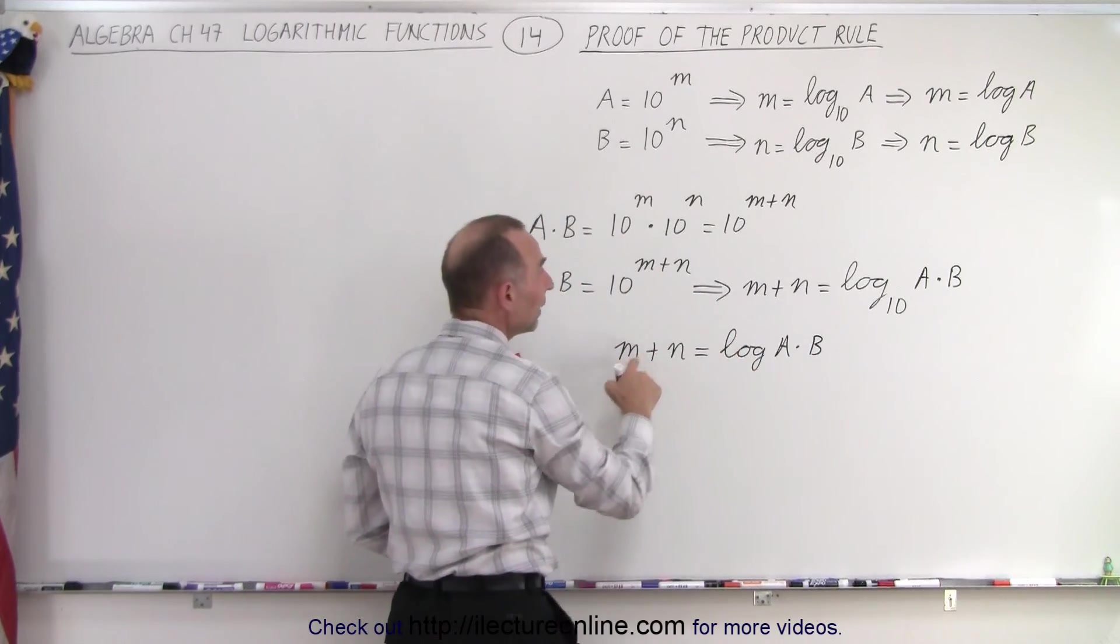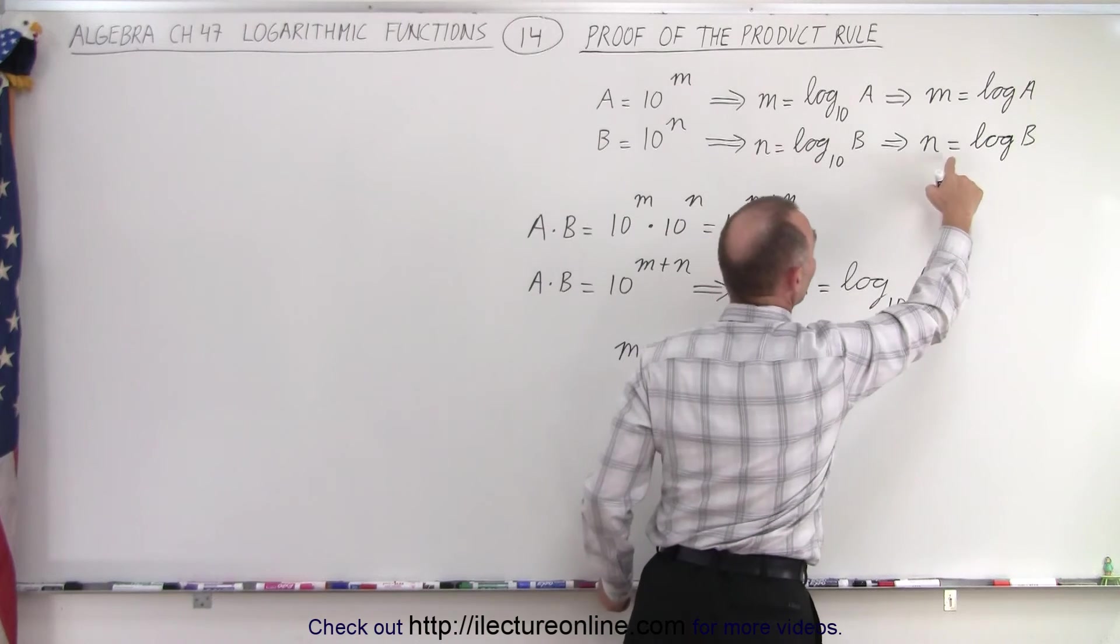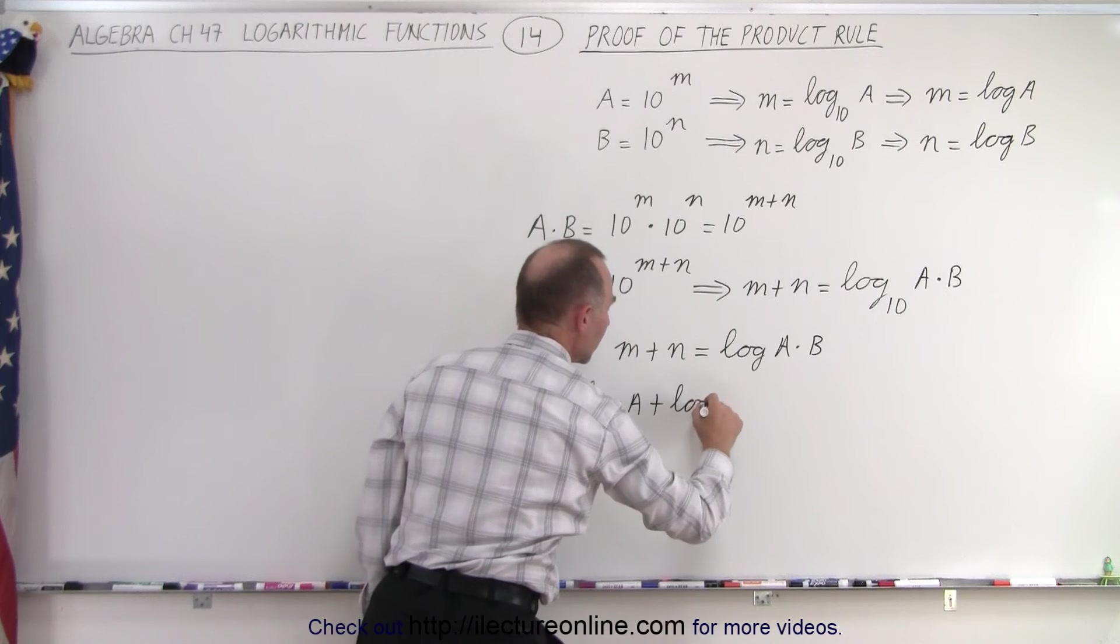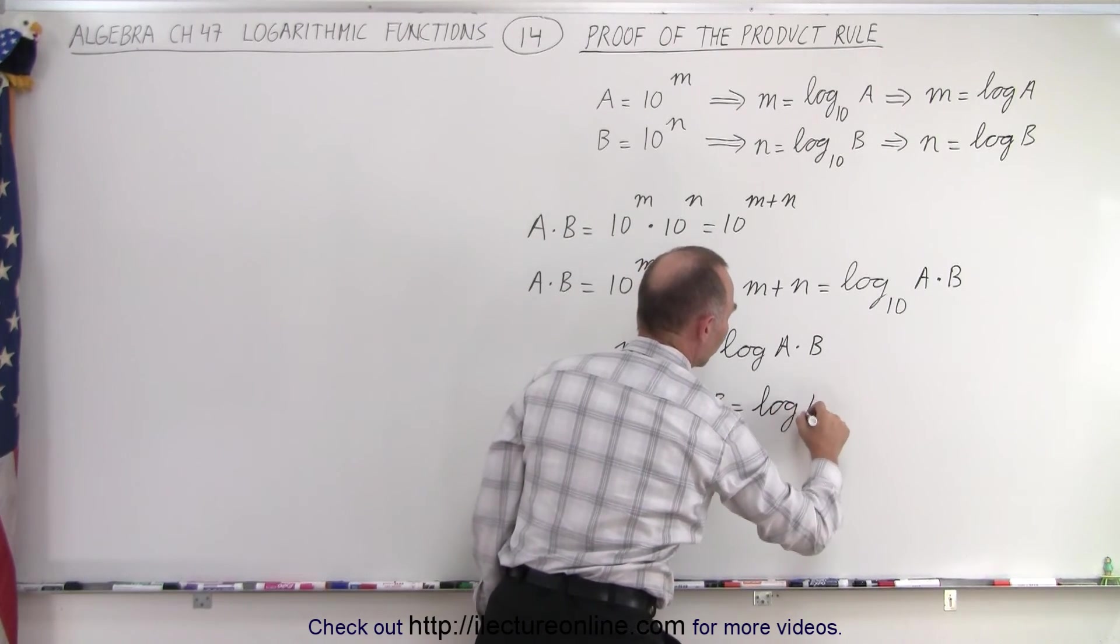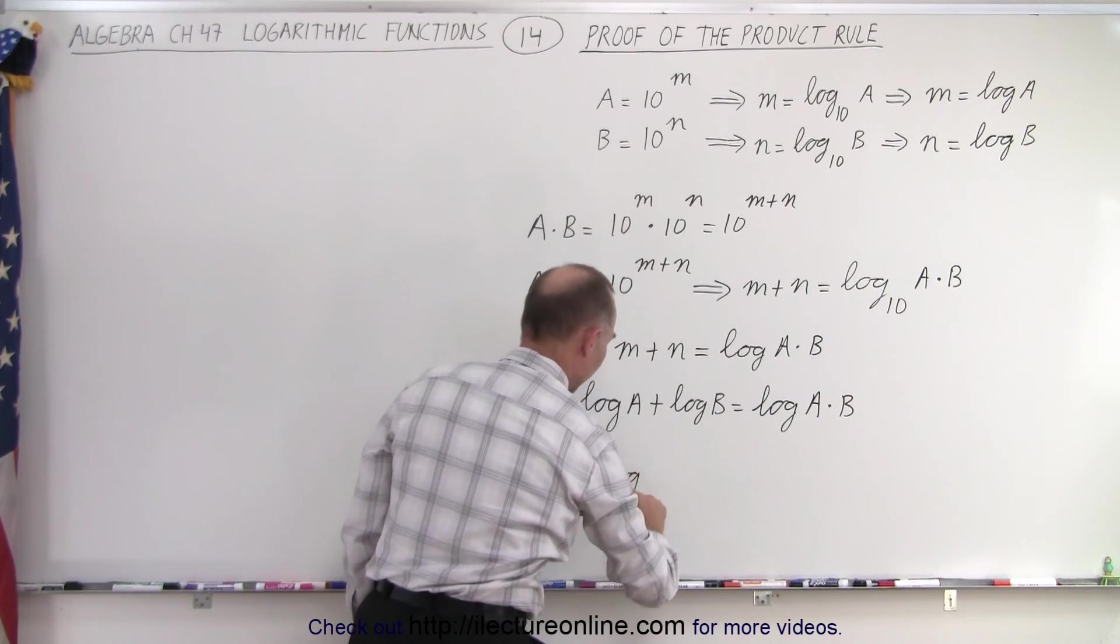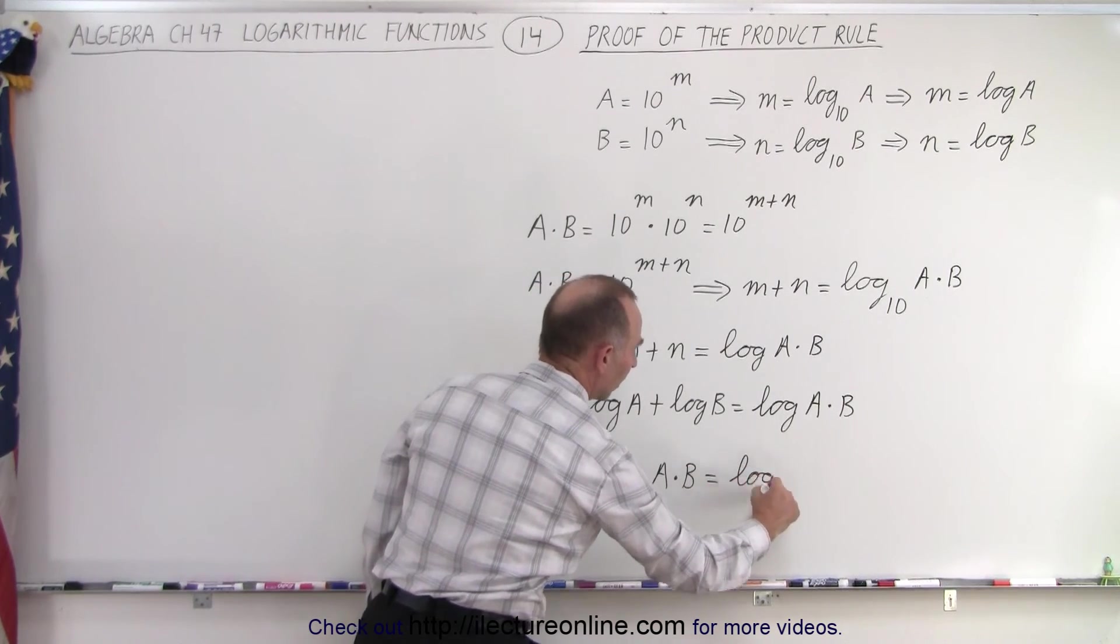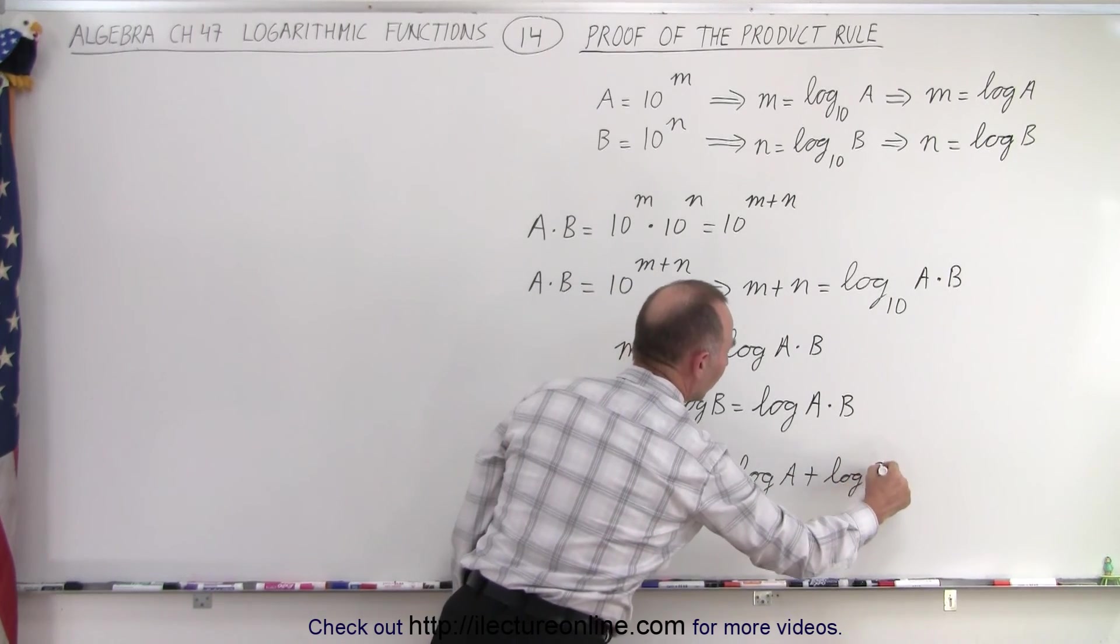Now, m is defined over here as the log of A and n is written as the log of B. So we can write this as the log of A plus log of B is equal to the log of A times B. And of course, we can reverse the order. So we can write that the log of A times B is equal to the log of A plus the log of B.